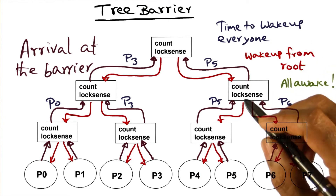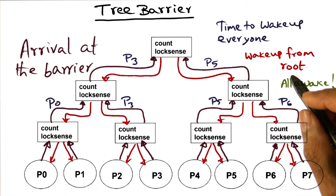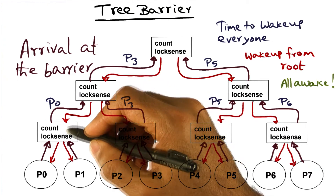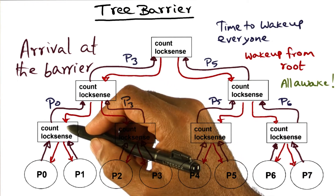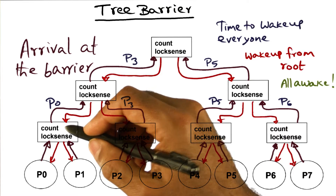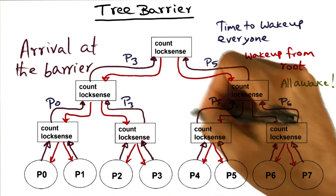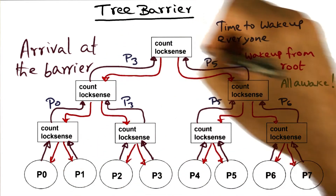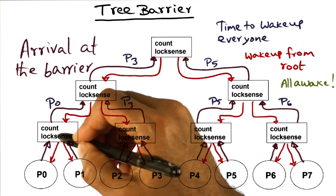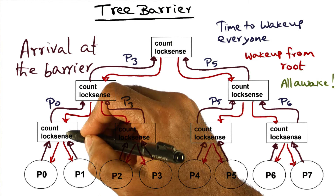But there are lots of problems as well. The first problem is that the spin location is not statically determined for each processor. For instance, if you take this particular execution shown in this picture, P0 happens to arrive later than P1, so P1 is the first to arrive here.